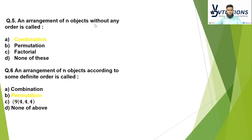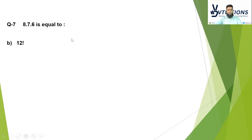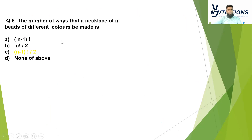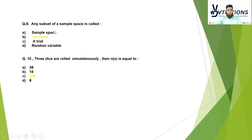An arrangement of objects without any order is called — the answer is combination. An arrangement of n objects according to some definite order is called — the answer is permutation. Then 8P3 — its answer is 336. The number of ways a necklace of n beads of different colors can be made — apply the formula: (n−1)! divided by 2. If a subset of a sample space is called an event — the answer is event. Three dice are rolled simultaneously, then n(S) is equal to what? The answer is 216.